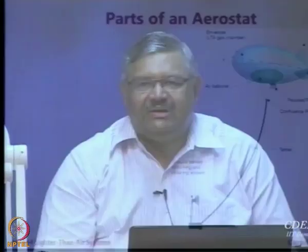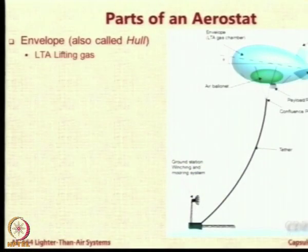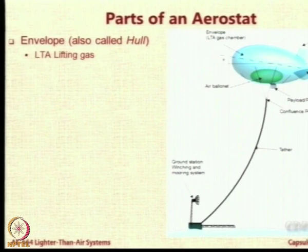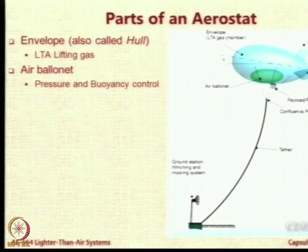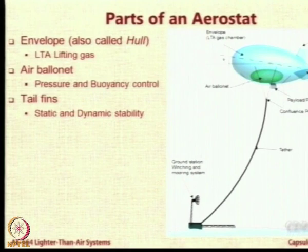To refresh your memory, this is a picture of a tethered aerostat system. The main component is the envelope, also called the hull, which is filled with LTA gas. Inside that envelope we have a green-colored air bag or air ballonet, which is essentially for pressure and buoyancy control. There are tail fins provided for static and dynamic stability, and the sizing of these fins must be done keeping in mind stability requirements.